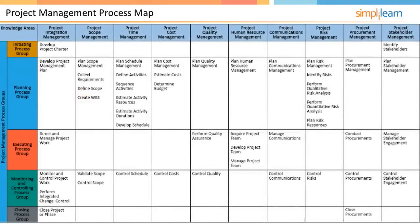Study the table to identify processes under project management and the knowledge area they belong to. All the 47 processes are described in detail in this tutorial. Each knowledge area is covered in detail as a lesson. It also covers how the processes map to process groups to help you understand the big picture. Further, the inputs and outputs of each of these processes, tools and techniques that are used, and what exactly happens during these processes are also discussed.